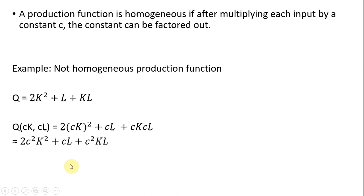And let's try to factor out some more. However, this is the best I can do. You'll notice in brackets we still have some C terms, so C cannot be completely factored out. And thus, we have an example of a production function that is not homogeneous.